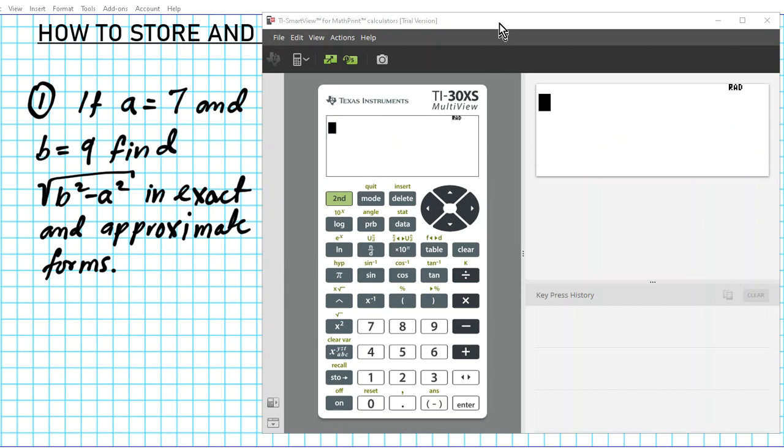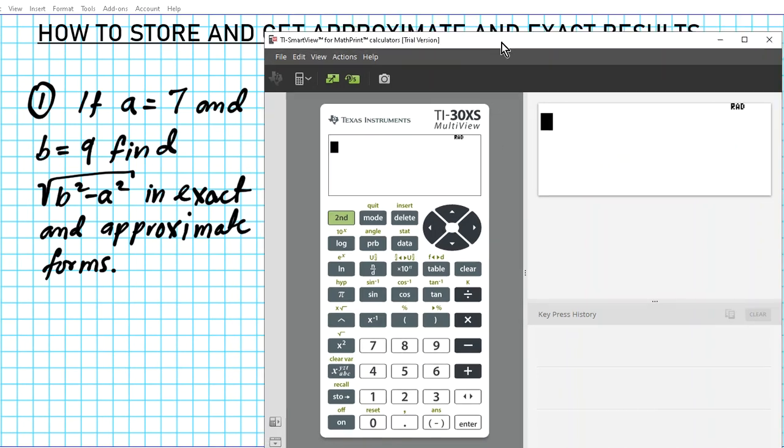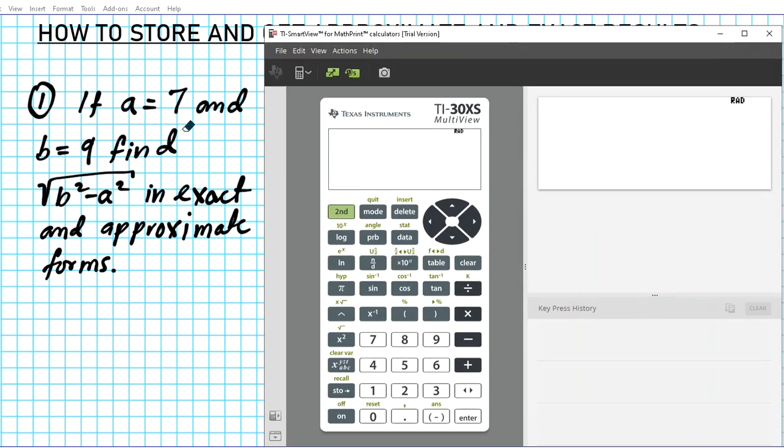Alright, so let's take a look at this example right here, question number one. It states if A is equal to seven and B is equal to nine, find the square root of B squared minus A squared in exact and approximate forms. Alright, so first things first, let's specify the mode of our desired output. Do we want exact or approximate?